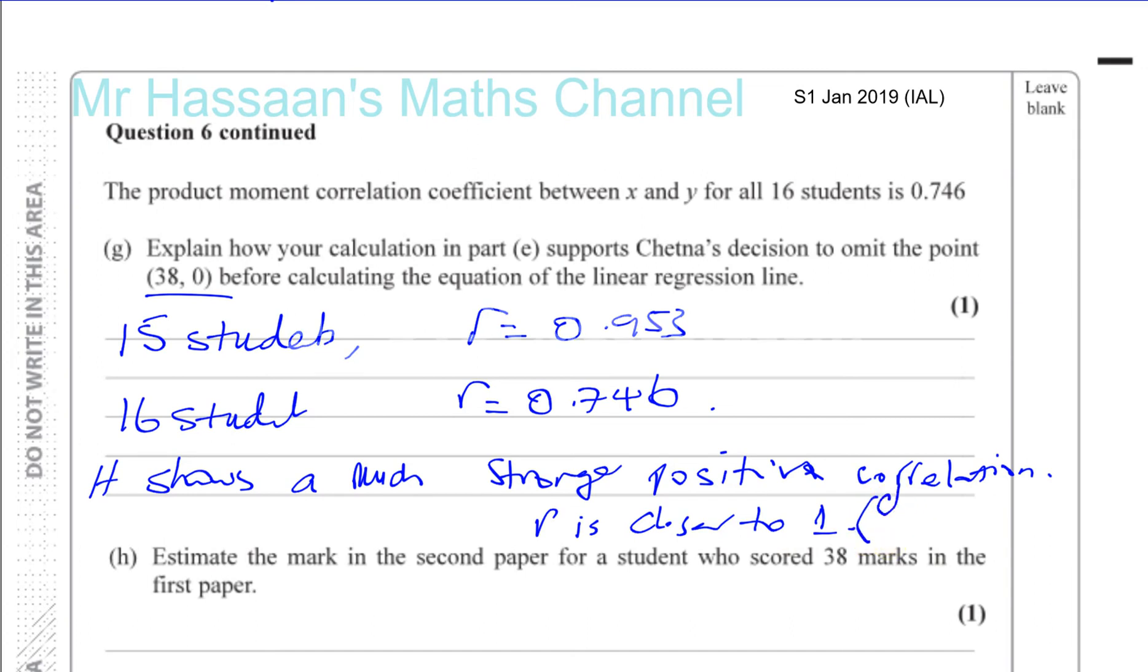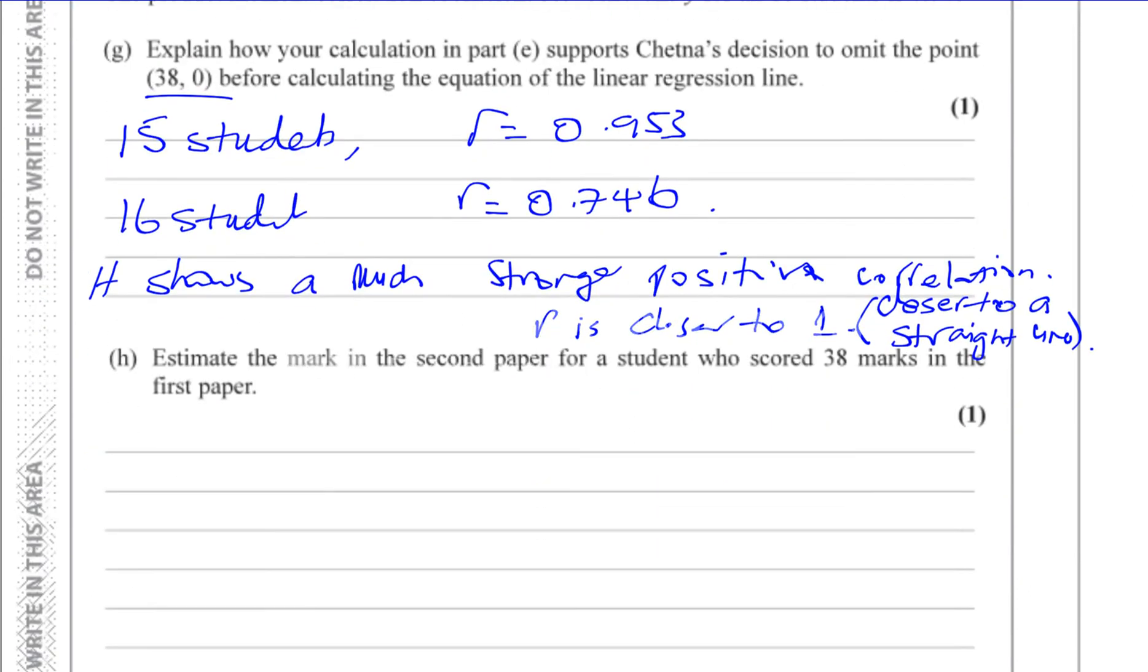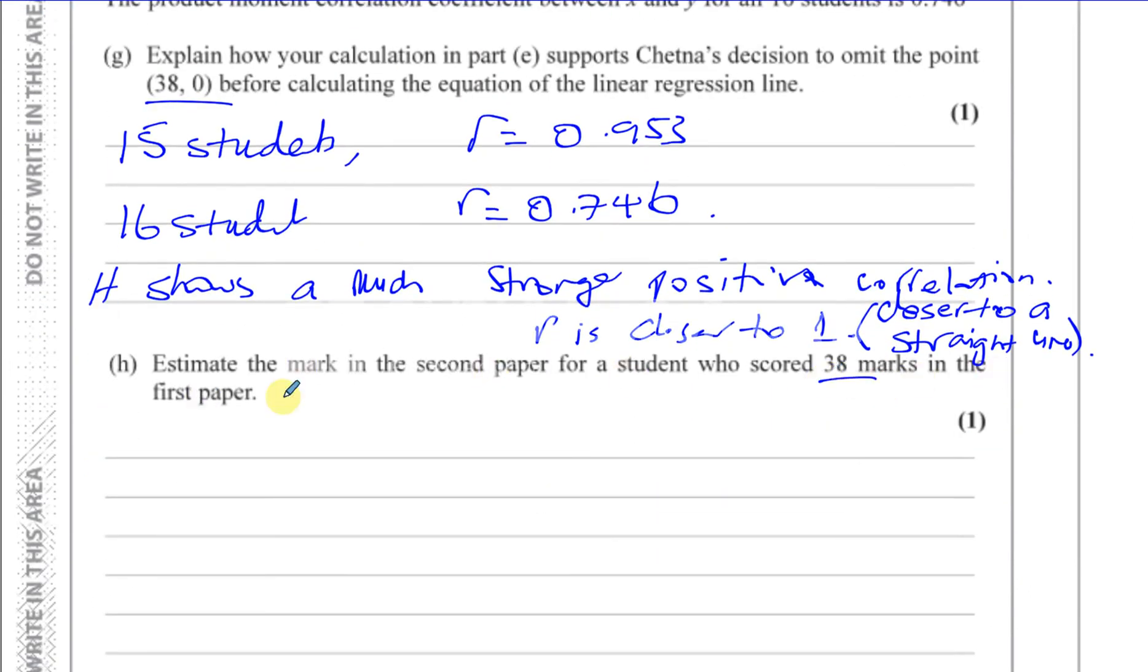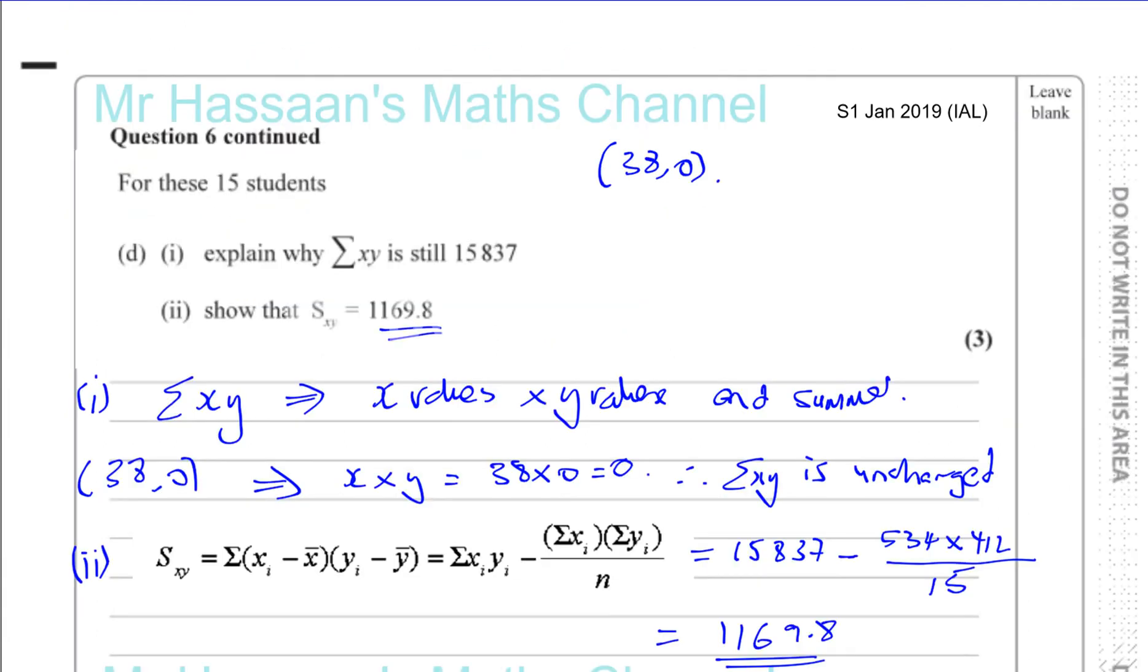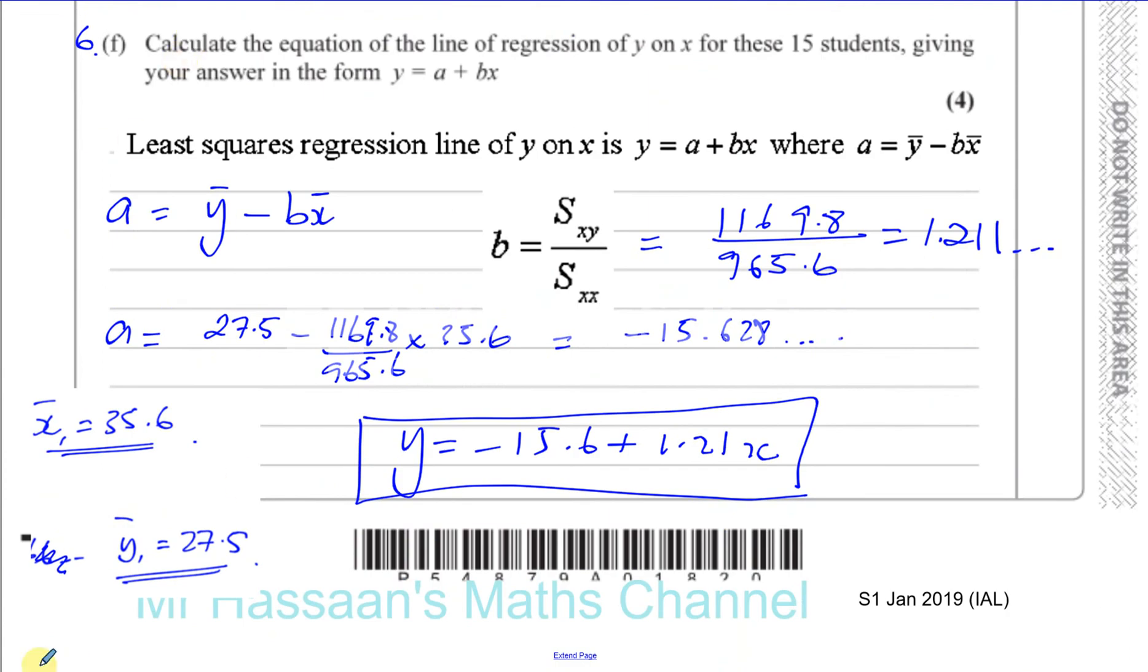Now, it says estimate the mark in the second paper for a student who scored 38 marks in the first paper. So, what we need to do is use our regression line equation, which is this, which I can just take along to the other page. And I can use it to do the estimation.